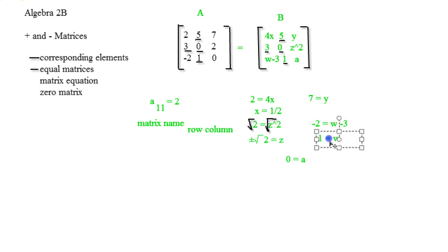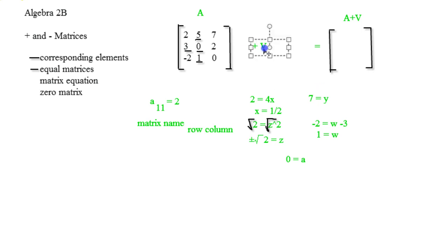Just knowing that corresponding spots are equal as we set this up. Now let's say we actually had a variable matrix that we're adding with the A matrix right here and we got A plus V matrix.